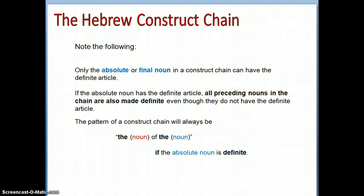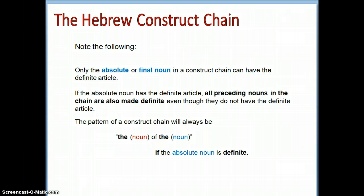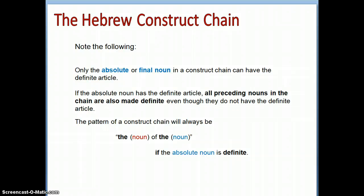Only the absolute or final noun in a construct chain can have a definite article. If the absolute noun has the definite article, all preceding nouns in the chain are also made definite automatically, even though they do not have the definite article. The pattern will be 'the noun of a noun' if the noun is definite. For example, 'on the table of the house of the man of the city' — if city is definite, all other nouns in the chain are automatically definite, even without the article.